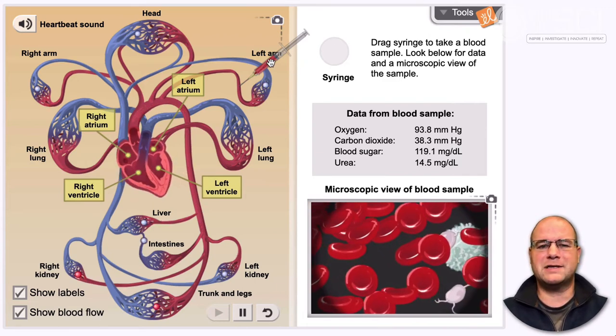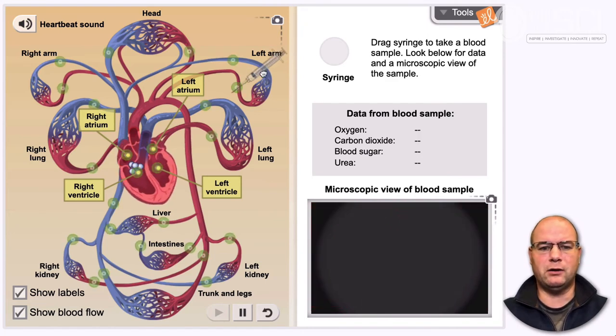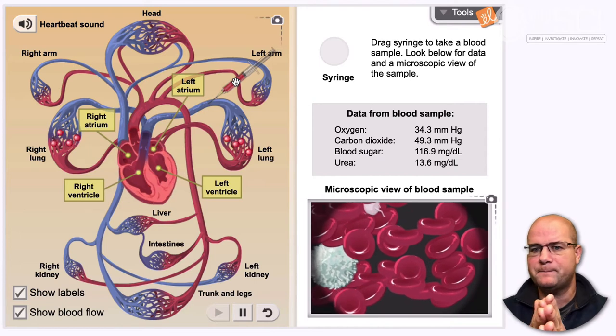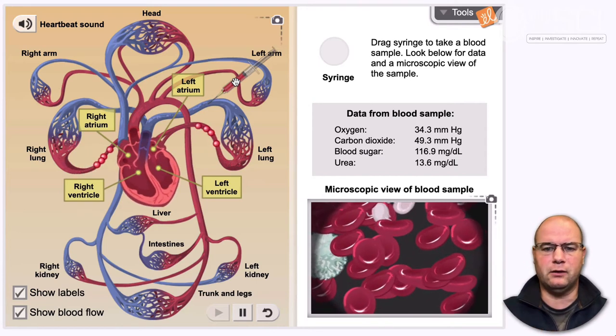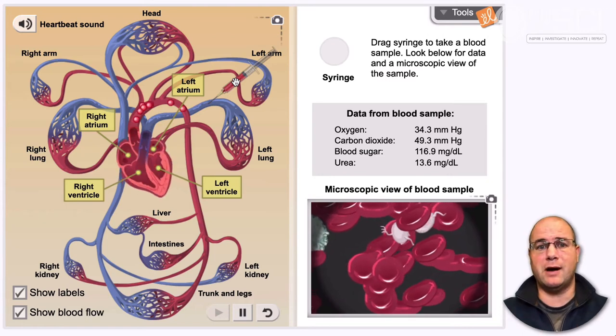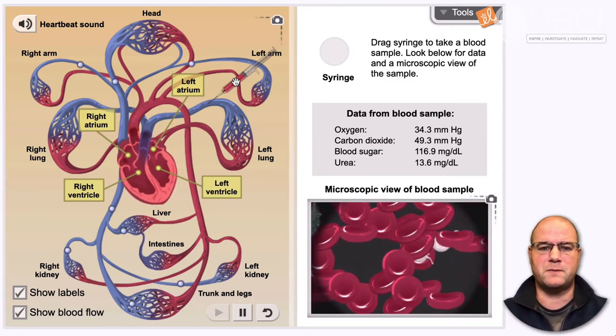But besides the muscles and bones and whatnot in our arm, we also have our lungs. So if we're going to look at it here, we have to test the blood before the lung. And then after, we can look at how the lung is changing the blood. Well, we know that our lungs are all about bringing oxygen into the body and releasing carbon dioxide, so that's what we would expect to happen.